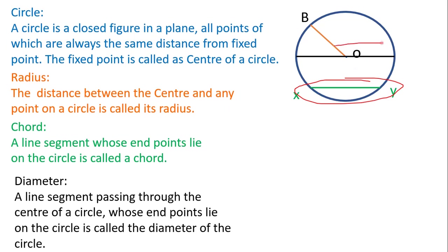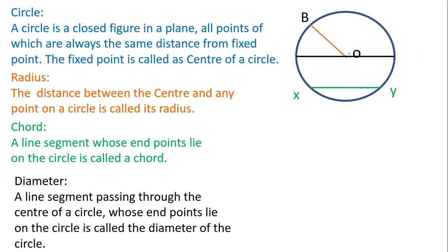A chord and a diameter share the same property, but one extra condition is there for diameter: it has to pass through the center. So whenever a chord passes through the center, we will also call that chord a diameter.